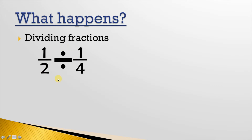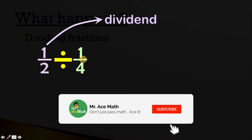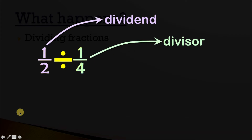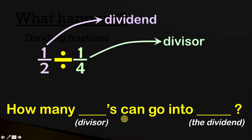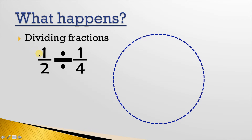So let's take a look at this example. It's a little bit trickier because both numbers in our division statement are fractions. Here's our one-half, and that one-half is our dividend. One-fourth is our divisor. So here's that question again: how many divisors can go into the dividend? So when we say one-half divided by one-fourth, we're really asking how many one-fourths can go into one-half. The first thing I'm going to do is draw a circle and create a half.